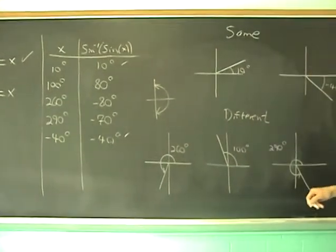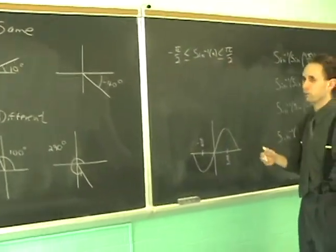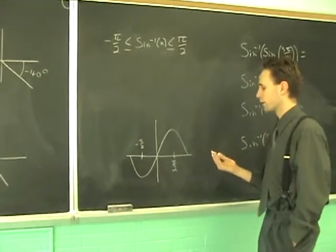And that's actually how they all go. The reason sine inverse of anything is always between minus pi over 2 and pi over 2. Why is that so?